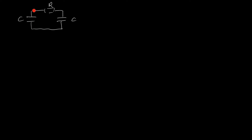Let's consider the more realistic scenario of connecting our two capacitors via some resistance R. Call the voltage on the left V1, the voltage on the right V2, with zero volts as the reference at the bottom, and let I be the current flowing from left to right. The equations for the capacitors give I equals C dV2/dt and I equals minus C dV1/dt. The equation for the resistor gives V1 minus V2 equals IR. Let V equal V1 minus V2, the voltage drop across resistor R.